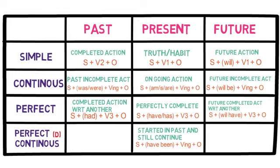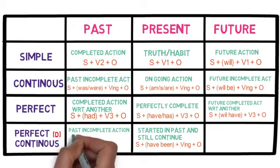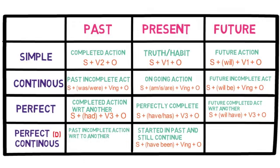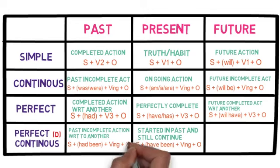In the past perfect continuous tense, we refer to a past incomplete action with respect to another. Importance is given to the duration of the action. The sentence structure is subject plus had been plus verb's -ing form plus object.